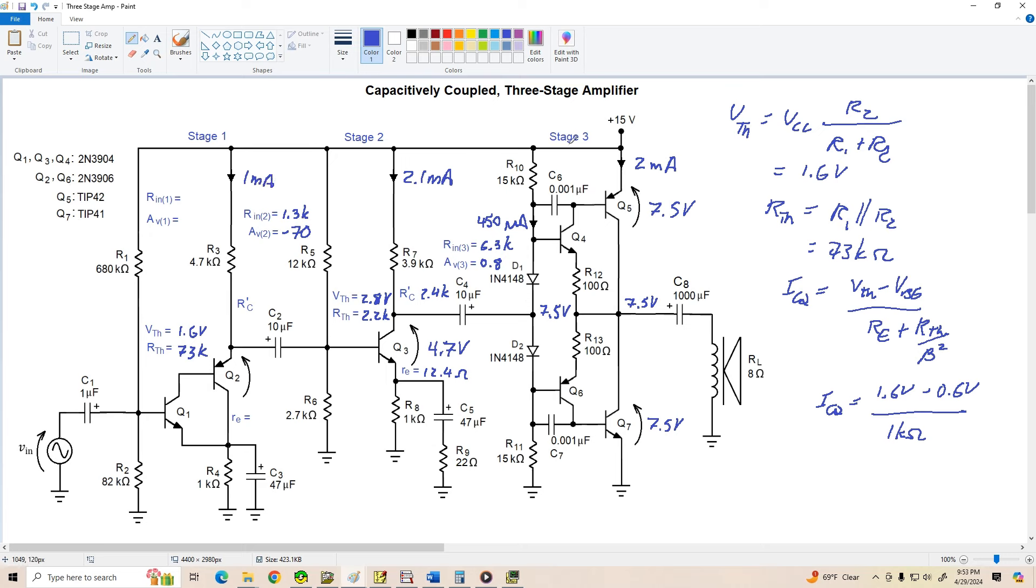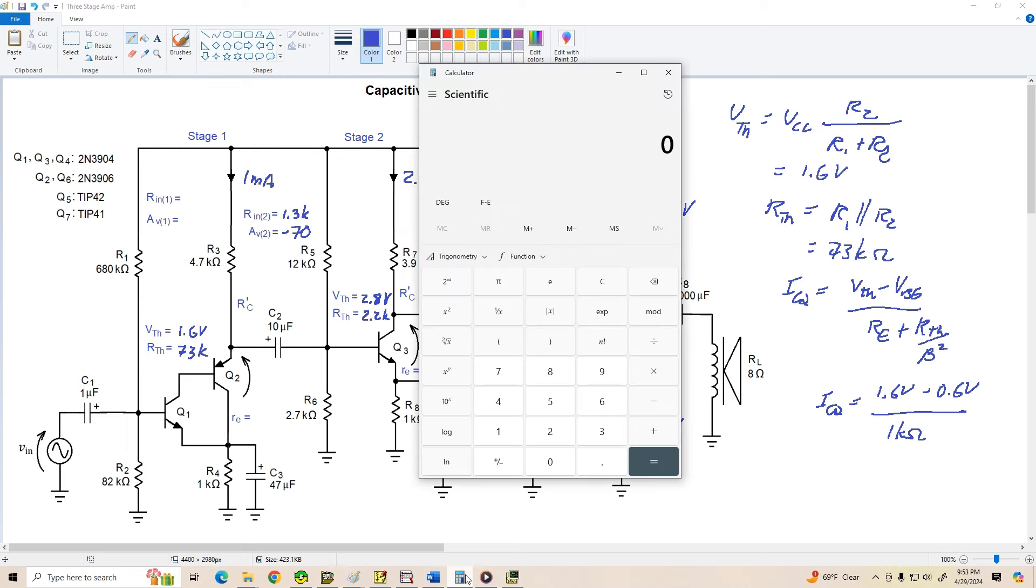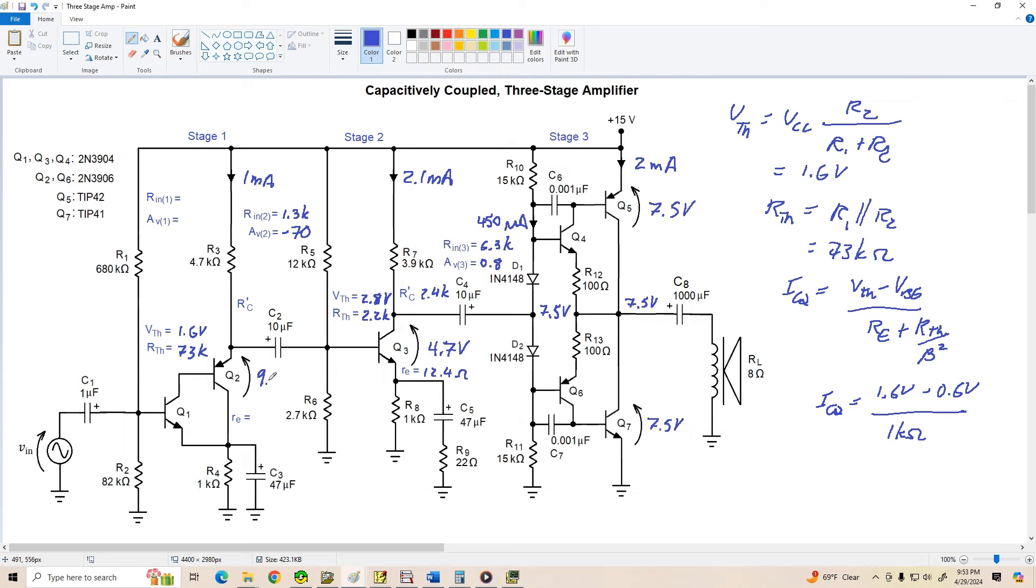Its VCE is going to be 15 minus ICQ times R3 plus R4. So that's 1 milliamp times 5,700 is 5.7 volts and minus 15. We're going to have a VCE of about 9.3 volts for Q2. Now let's find little RE for this stage. Again, 26 millivolts divided by ICQ. So we've got 26 mils divided by 1 mil is 26 ohms. So little RE is just 26 ohms here.